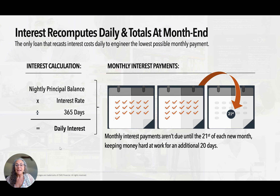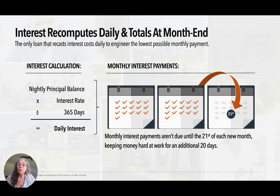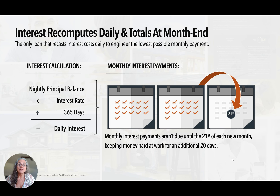Those daily interest charges are tabulated and swept out of the account on the 21st — that's your interest payment to the bank. Remember, your mortgage payments are your deposits, and your deposits are your payments to principal. We just take out the interest that has accrued using this simple interest calculation on the 21st of the month.